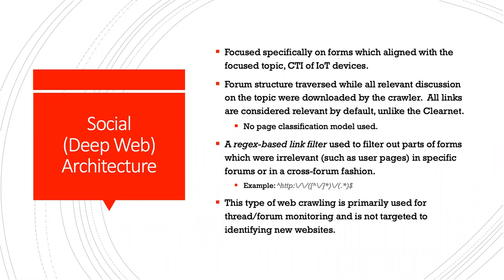For the deep web architecture — or in their case, the social web architecture — focus specification was on forums specifically aligned with cyber threat intelligence for IoT devices. Forum structure is traversed while all relevant discussions on the topic are downloaded by the crawler. All links are considered relevant by default. For the clear net, that spider had to be able to identify if links were relevant or not, whereas for the deep and the dark net, all links are considered relevant. No page classification model was necessary.